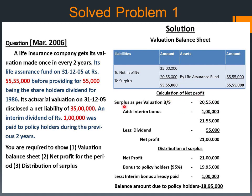Calculation of net profit: Surplus as per valuation balance sheet is Rs 20,55,000. Add interim bonus — interim bonus is paid during the period — given in the question Rs 1,00,000. So the profit available becomes Rs 21,55,000. Then less dividend — dividend proposed for the year — that is Rs 55,000. So the net profit now available for distribution is Rs 21,00,000.